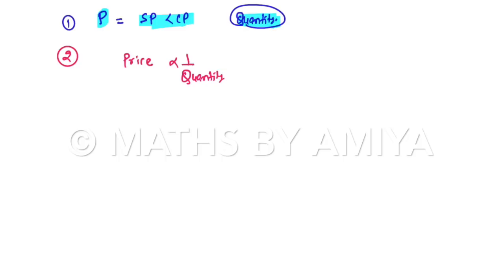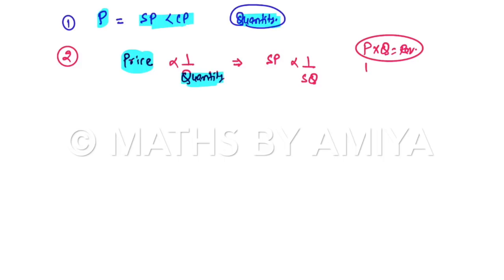If we increase the price, we are going to decrease the quantity in the market — that is basic economics. So selling price is inversely proportional to selling quantity. This holds because price × quantity = revenue. If we want price to increase and revenue to remain constant, we have to decrease the quantity.